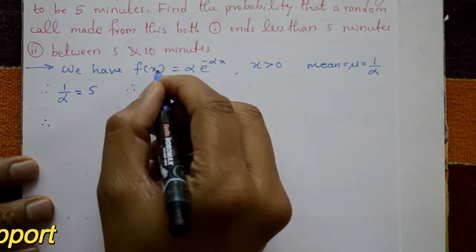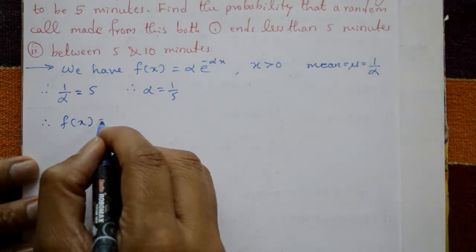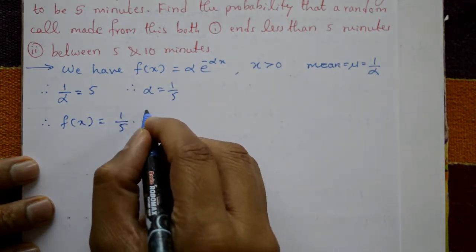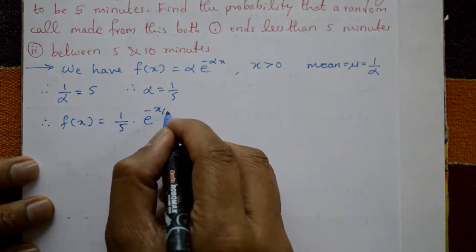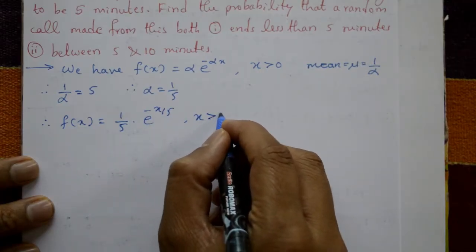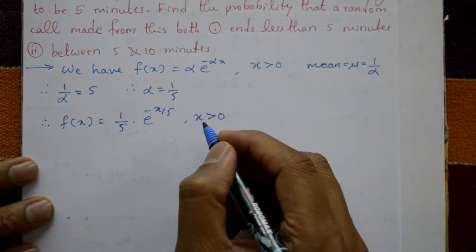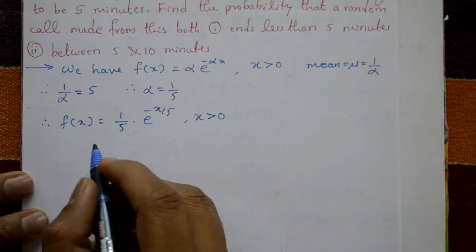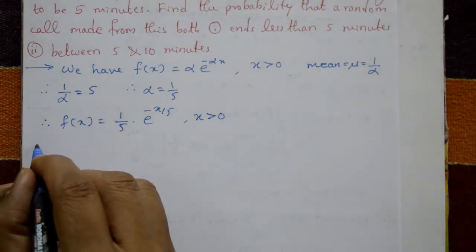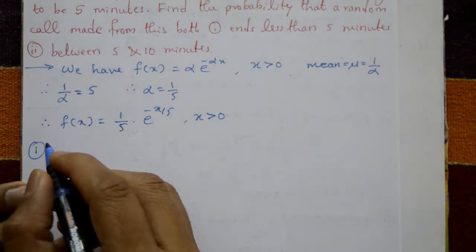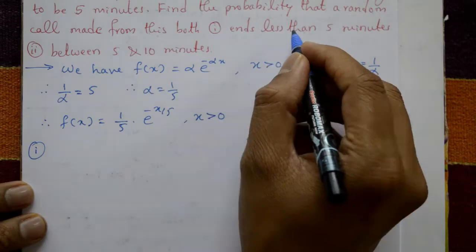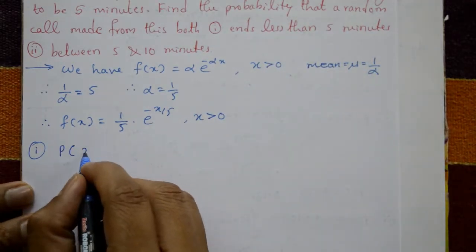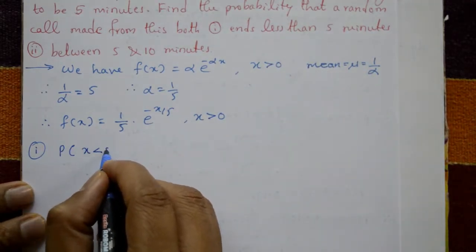Therefore, the function is f(x) = (1/5) · e^(−x/5) for x > 0. Now go to Case 1: find the probability that the call ends in less than 5 minutes, meaning P(X < 5).